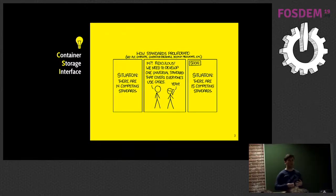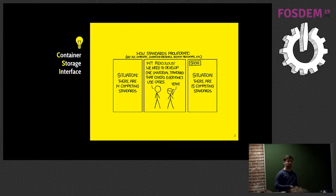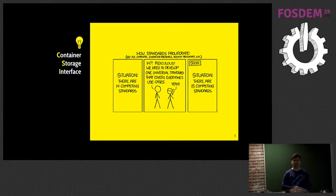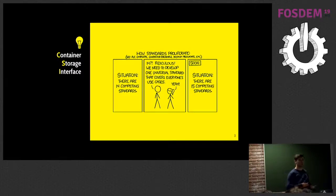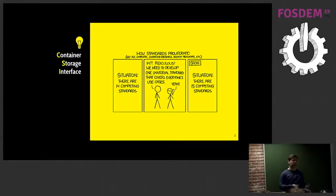We'll go a little bit over the CSI spec — the first release that came out in November — and we'll see how it works and what are its chances to make it. One of the things CSI is really trying hard to do is to be storage-agnostic and open to all the different storage vendors, their deployment options, and their features.